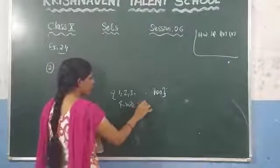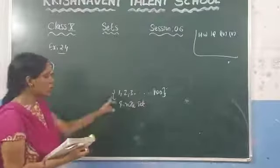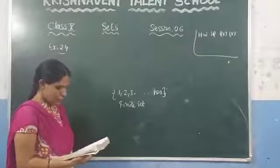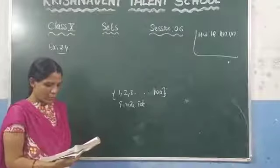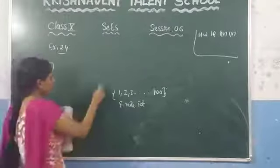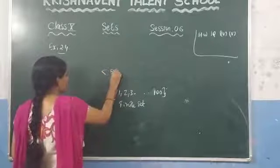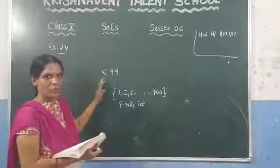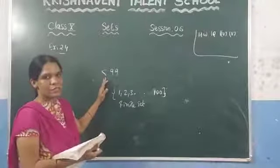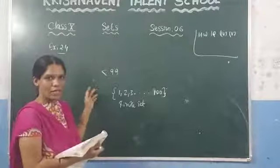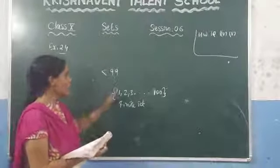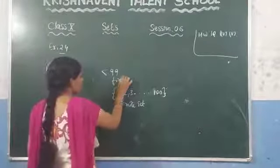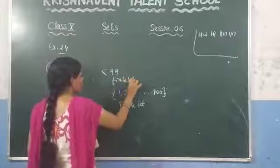A finite set means we can count the number of elements. The set {1, 2, ..., 100} has 100 elements, so it is a finite set. The next one asks about the set of prime numbers smaller than 99. You can write the prime numbers: 2, 3, 5, 7, 11, and so on up to less than 99. We can count them, so it is also a finite set. This one is your homework.